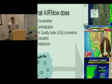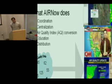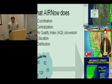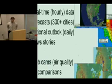A little more about Air Now: we do a lot of coordination between state and local agencies and the media. We provide centralization for all the air quality data collected at various levels across the country. We convert all the raw data to the Air Quality Index — AQI — which is our public tool for reporting air quality. It's a five-color system that contains health effects information so the public can figure out what the air quality is and what they can do about it. Our data goes to CNN, the Weather Channel, USA Today, and various other media outlets.